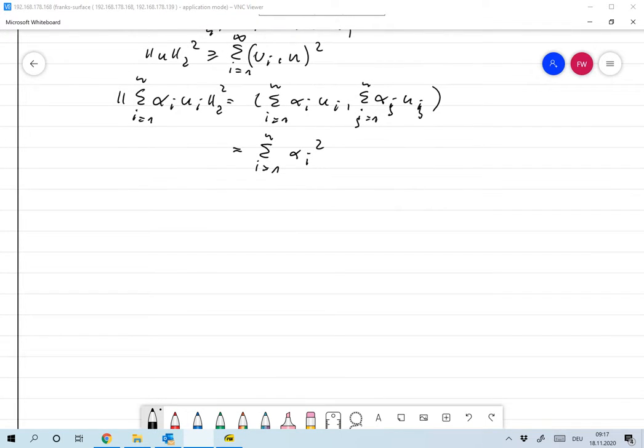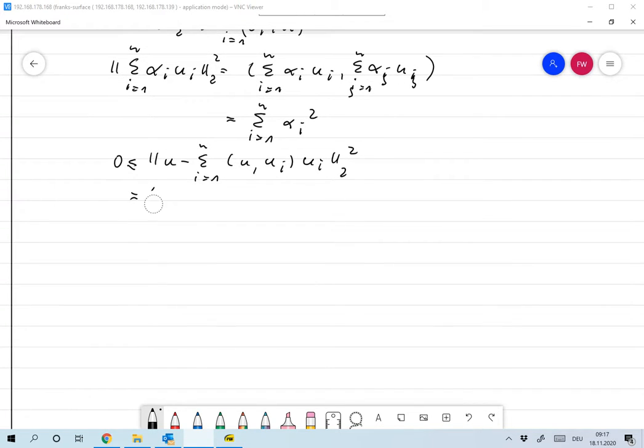Now the second thing is, we have that the norm of u minus the sum from 1 to N of ⟨u, u_i⟩ times u_i, two norm squared, this is definitely larger or equal to 0. That's the same as the scalar product of that with itself. So I'll just give you the result.